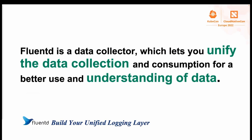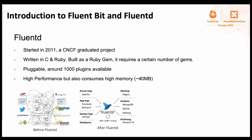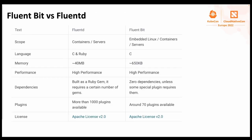FluentD is a data collector which lets you unify data collection and consumption for better use and understanding of data. FluentD is much more mature than FluentBit, having started in 2011, and has been a CNCF graduated project. FluentD was written in C and Ruby. It is also pluggable and has around 1,000 plugins available. FluentD allows you to build your own unified logging layer, enabling developers and data analysts to utilize many types of logs as they are generated, and it mitigates the risk of bad data slowing down or misinforming your organization. Let's take a look at the comparison of FluentBit and FluentD.